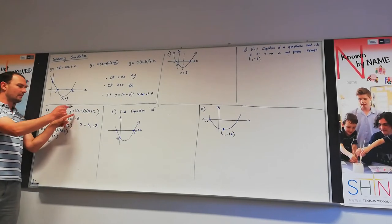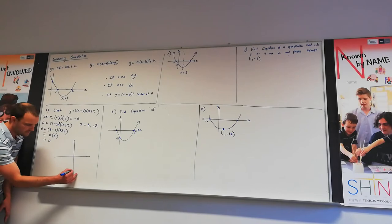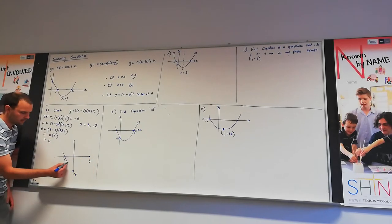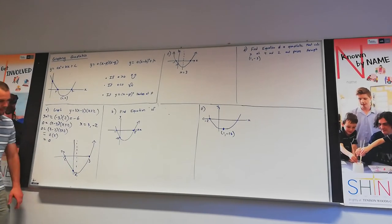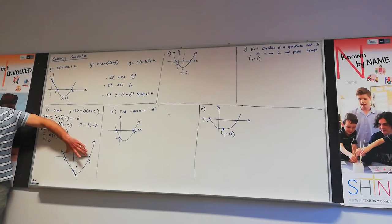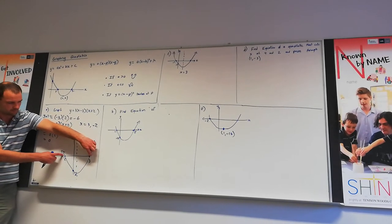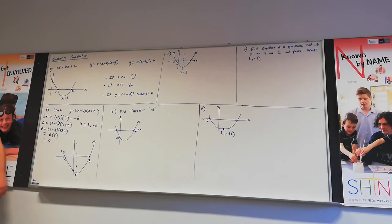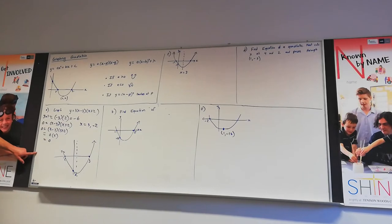Now we have all the information to draw the shape: y-intercept of −6, x-intercepts at −2 and positive 3, and then the parabola passes through those points. The quadratic is symmetrical — the axis of symmetry sits halfway between the two x-intercepts. So the minimum point is not at the y-intercept, but occurs halfway between −2 and 3. Any questions about that one? What you'll do is just state the intercepts and plot them — the detailed working was just me explaining the process.